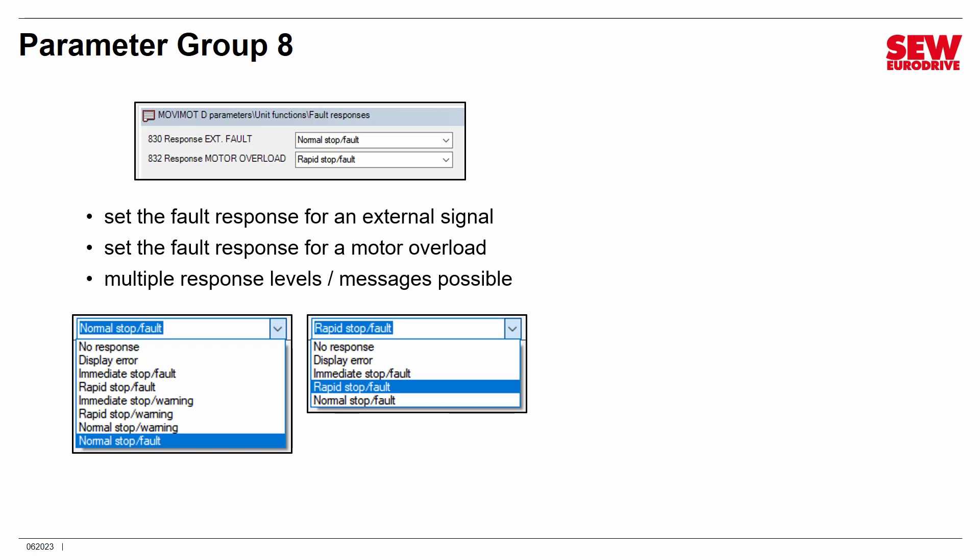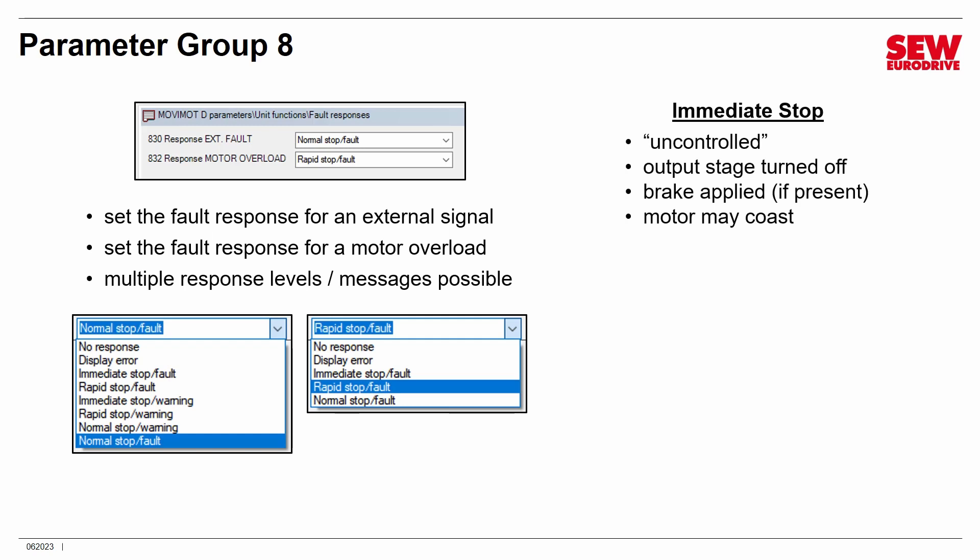You may wonder about the difference between the types of stops. Movimot can stop itself in three ways. An immediate stop is an uncontrolled stop — the Movimot simply switches off the output transistors and attempts to apply the brake if present. If there's no brake, the motor may coast a long time depending on load momentum. A rapid stop is a controlled stop: the Movimot uses the ramp value set in parameter 136 to deliberately slow the motor down, then turns off the output transistors and applies the brake. This gives a predictable stop time.